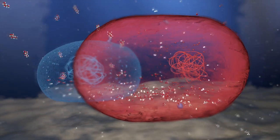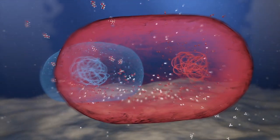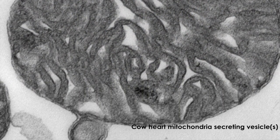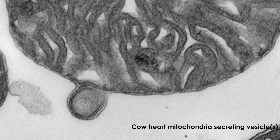In this view, endosymbiosis is the key to eukaryotic complexity and in support of our proposal, modern mitochondria generate membrane vesicles that they secrete into the cytosol.